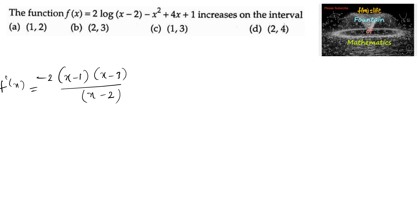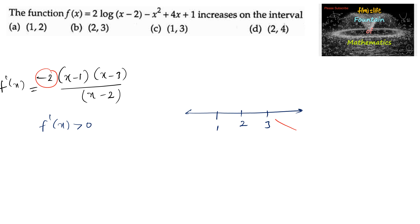For increasing, we consider f'(x) greater than 0. We take the critical points x equals 1, x equals 2, and x equals 3 on the number line. Since the leading coefficient is negative, the curve starts from the negative side. Since all factors are odd powers, the sign alternates: negative, positive, negative, positive across the intervals.